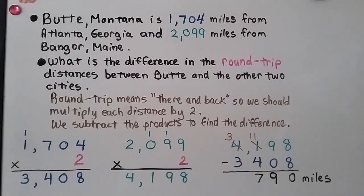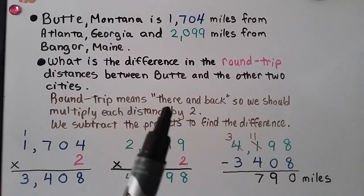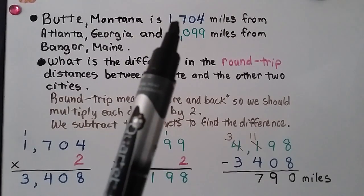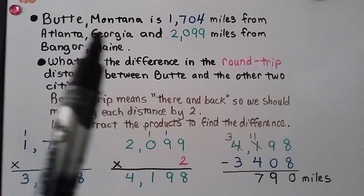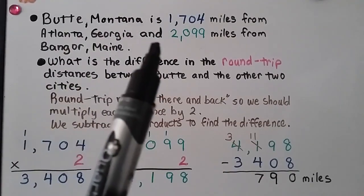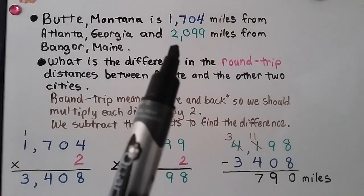Butte, Montana is 1,704 miles from Atlanta, Georgia, and 2,099 miles from Bangor, Maine. What is the difference in the round trip distances between Butte and the other two cities? Be careful — round trip means there and back, so we multiply each distance by 2: 1,704 times 2 for Butte to Atlanta, and 2,099 times 2 for Butte to Bangor.